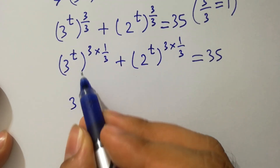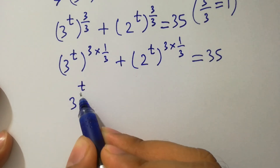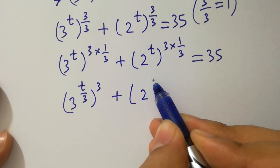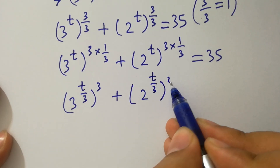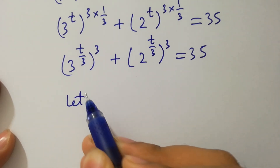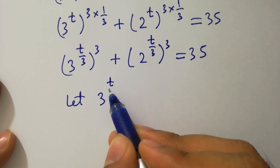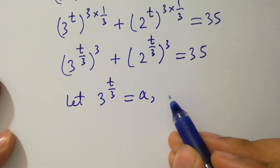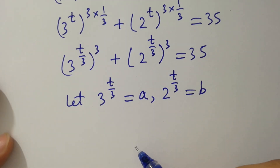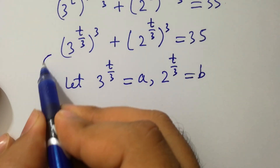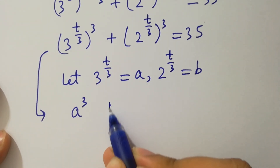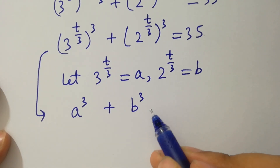We have 3 to the power t times 1 over 3, which is t over 3, to the whole power 3, plus 2 to the power t over 3, to the whole power 3, equal to 35. Let's simplify: let 3 to the power t over 3 equal to a, and 2 to the power t over 3 equal to b, which are natural numbers. Then it will be a cube plus b cube equal to 35.